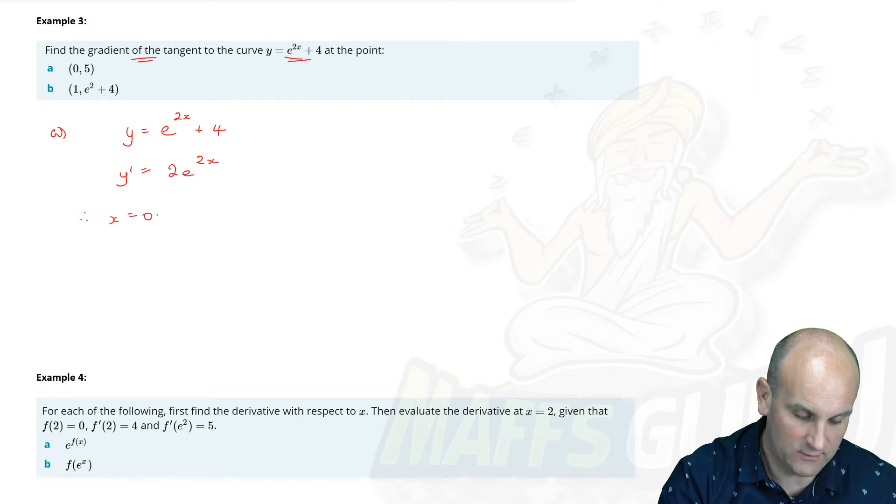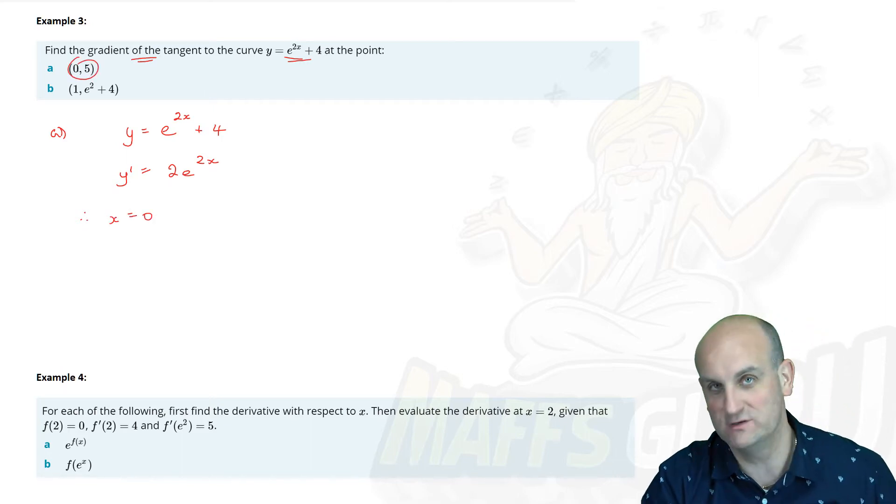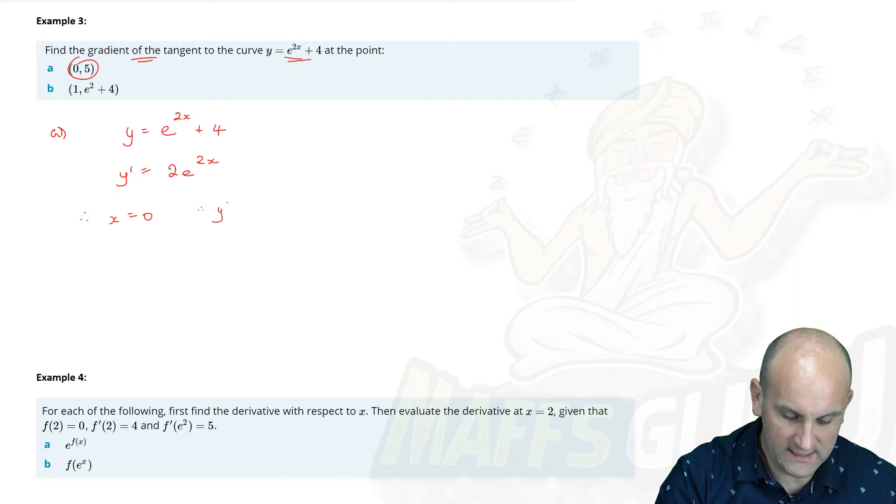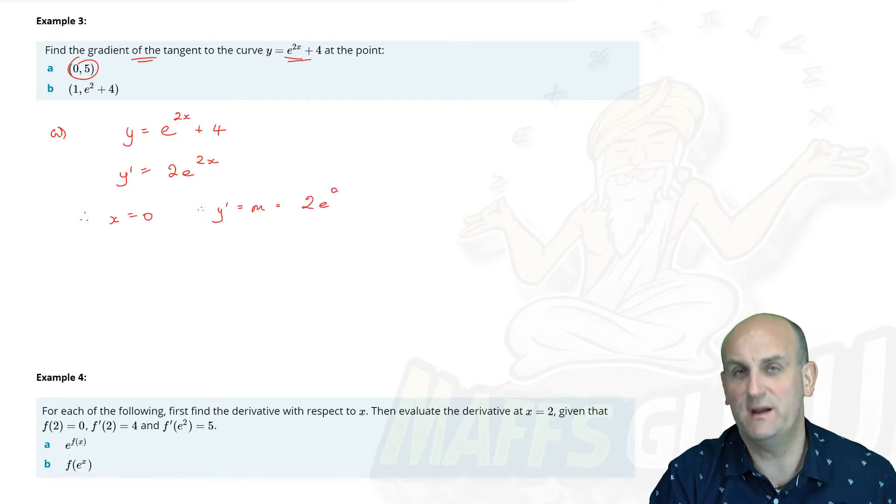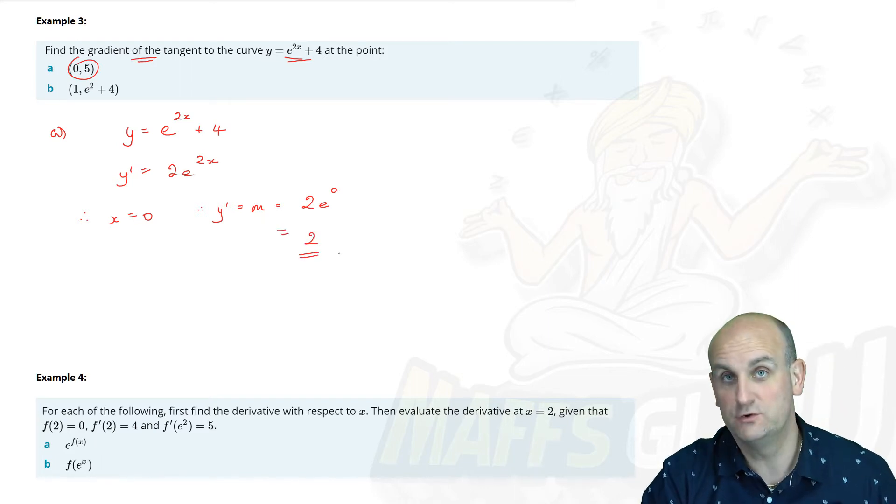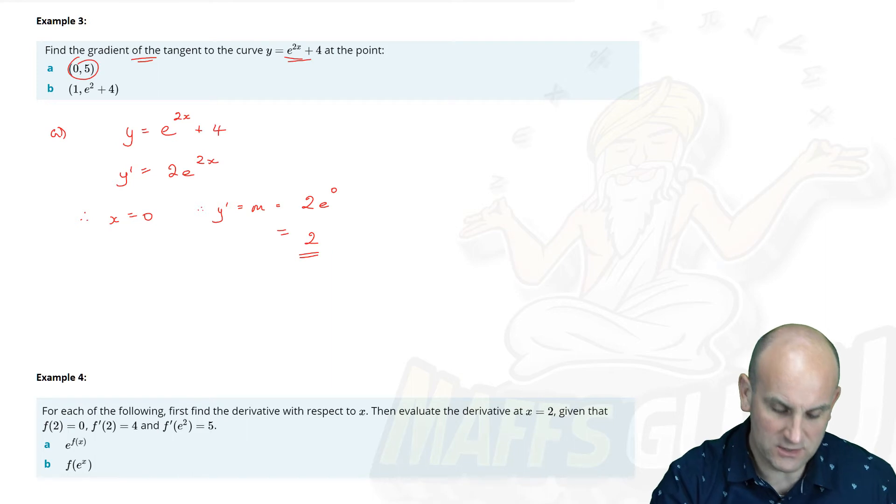I now know that my y' is given by 2e^(2x). The 4, remember, differentiates to nothing. It disappears. And there is my differential. So therefore, when x is equal to 0, how did I know that? Because I've got (0, 5) and a coordinate is just code for giving me an x value and a y value. When x is equal to 0, we therefore say that y', which is otherwise known as m, which is the gradient of my tangent, is 2e^(2×0) is 0. Well, e to the power of 0 is 1. And in which case that will give me a value of 2. Love it. Thank you very much.